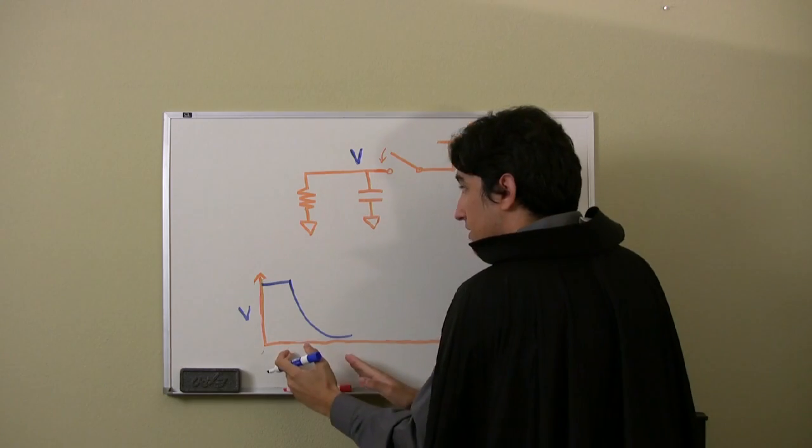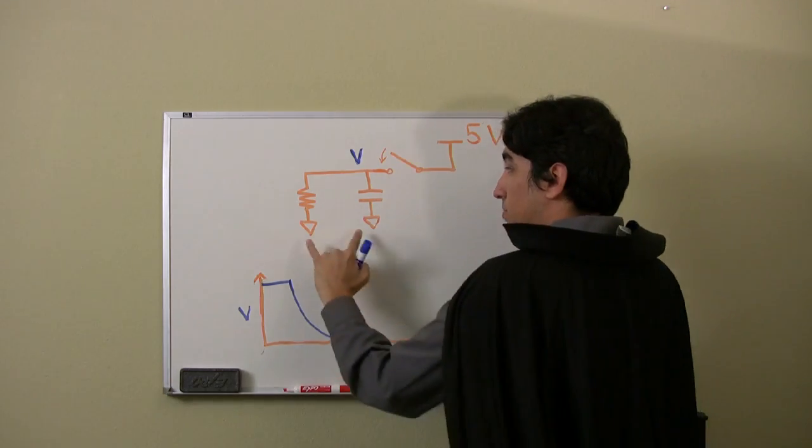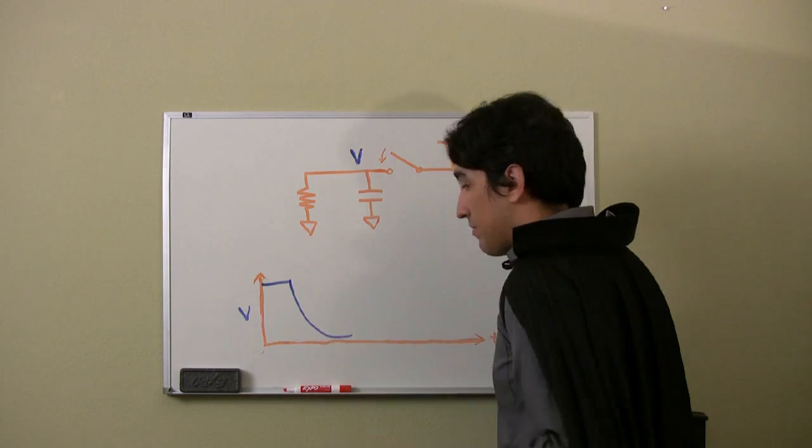Now how long it takes to discharge has to do with this resistance and this capacitance. It's actually the product of them. It's the RC time constant of the system.